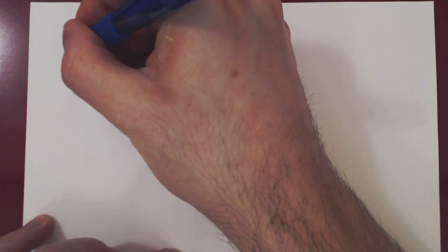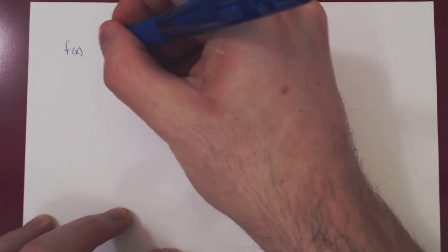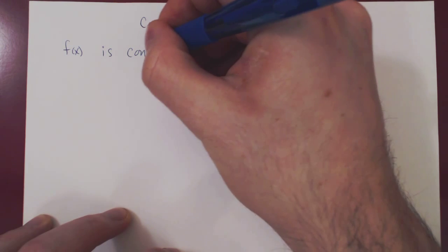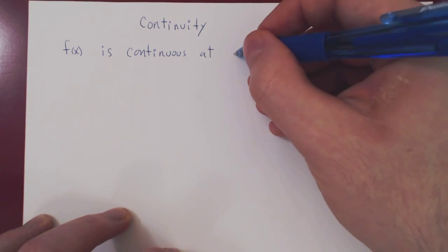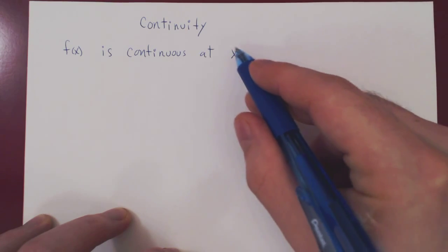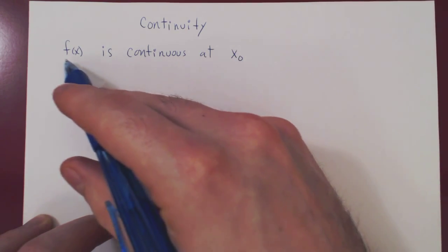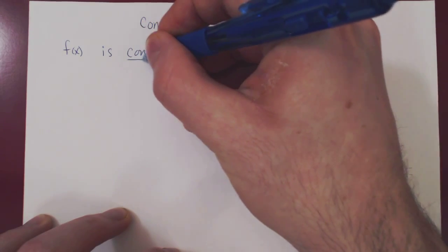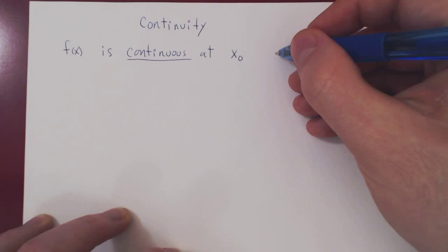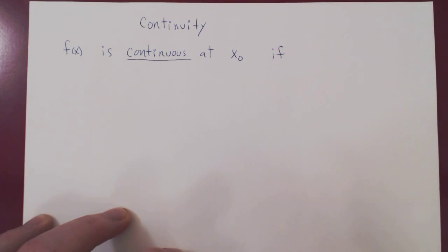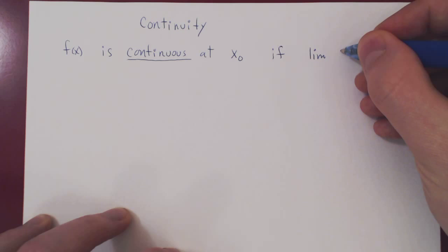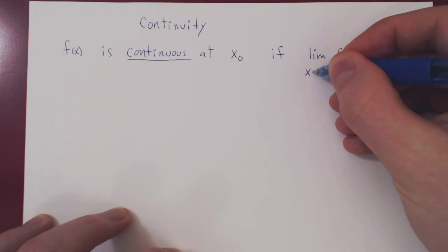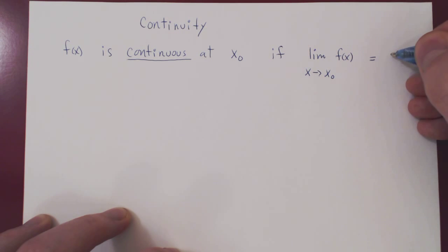We have a function f of x, and we say f of x is continuous at a specific value of x, so we could say at x0. Think of x0 being a fixed value of x. So f of x is continuous at x0 if the following equality is valid: if the limit of f of x as x approaches x0 is equal to the value of the function at x0.